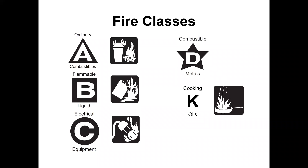We also have Class D — combustible metals such as sodium and magnesium. The last class is K, for cooking oils. Commercial kitchens have extinguishing systems mandated by code, and we must ensure that whatever we use on that material doesn't negate the automatic suppression system.